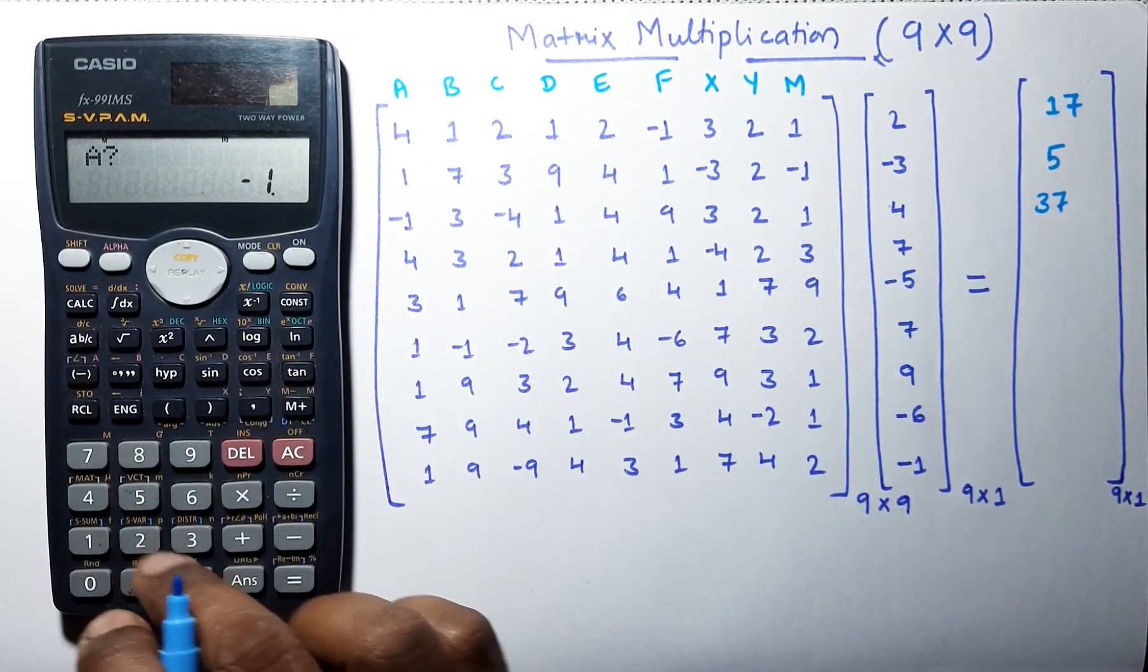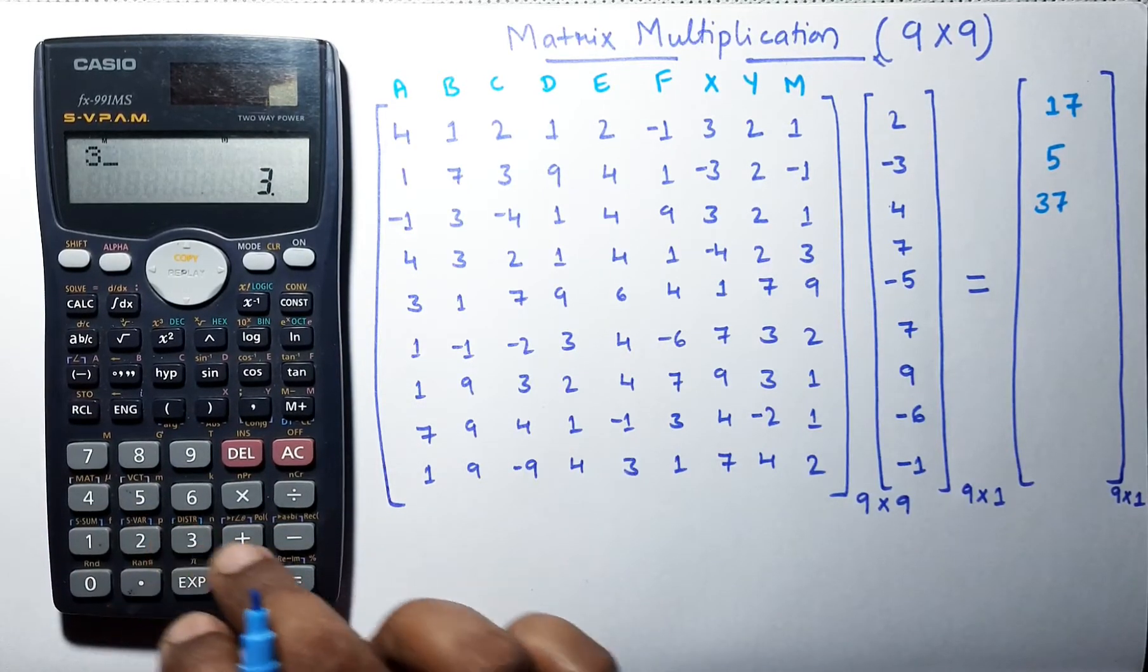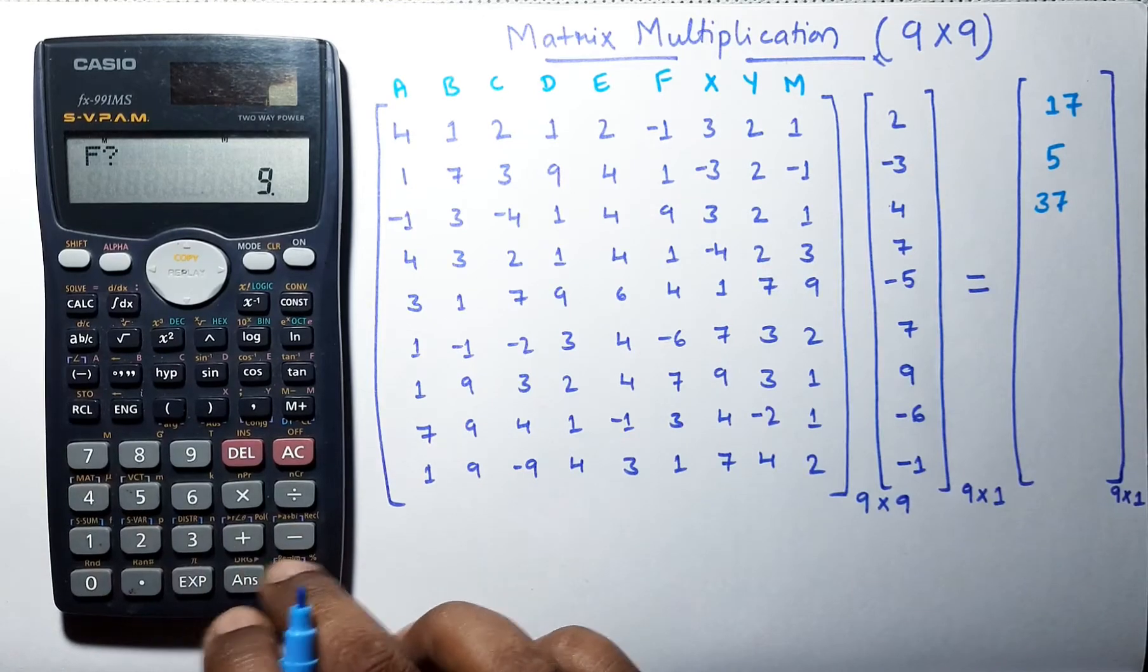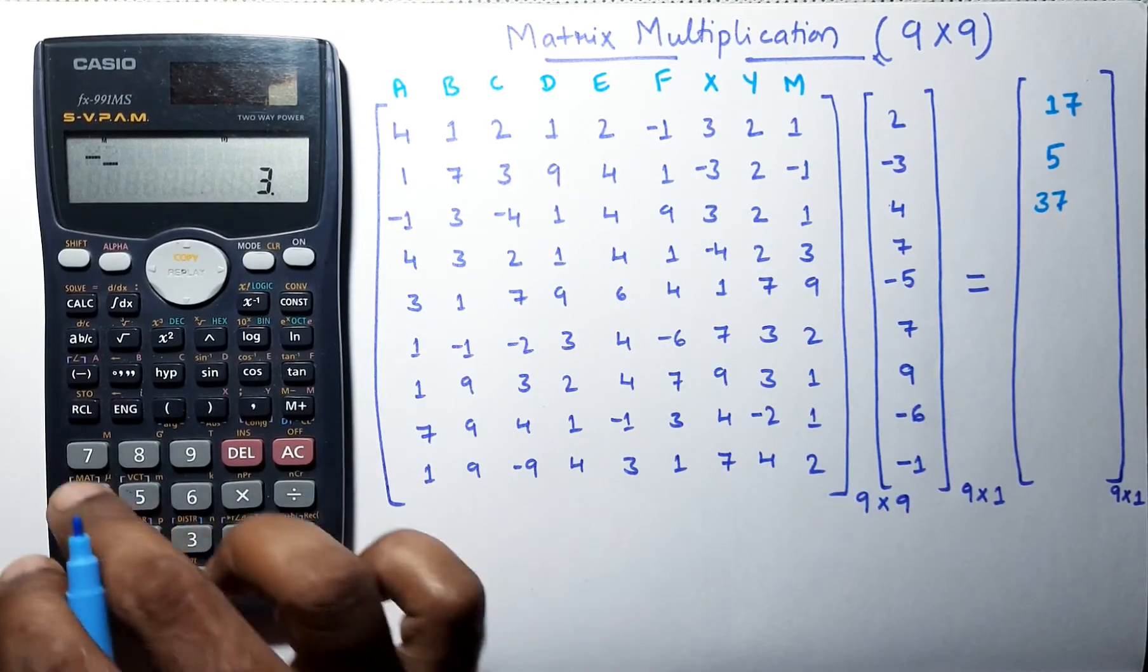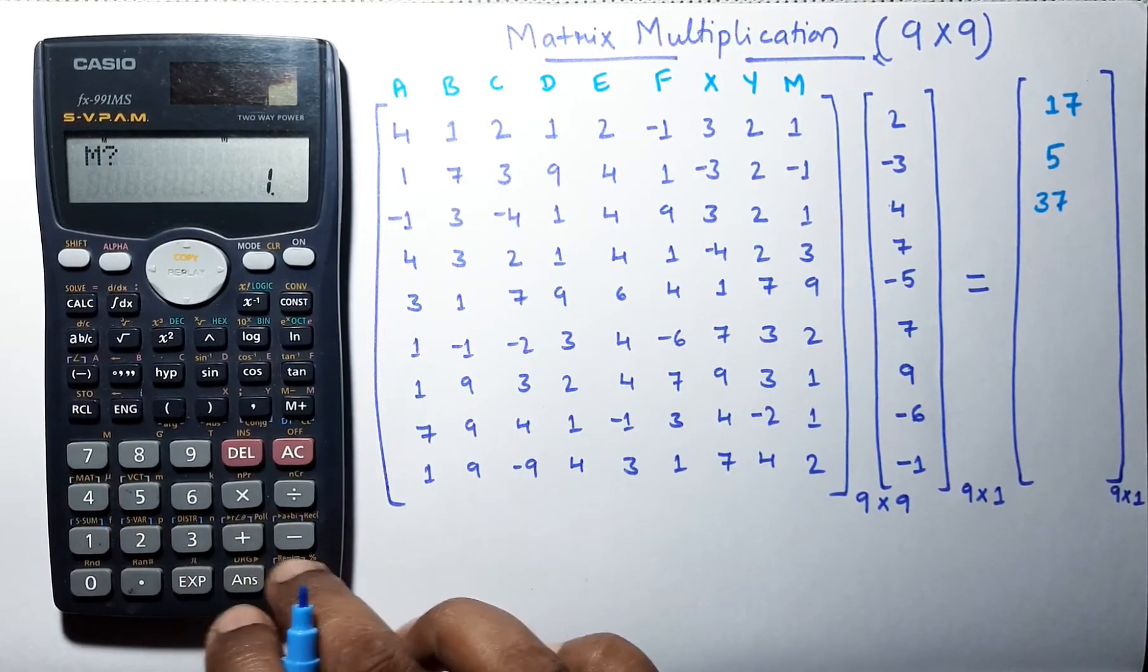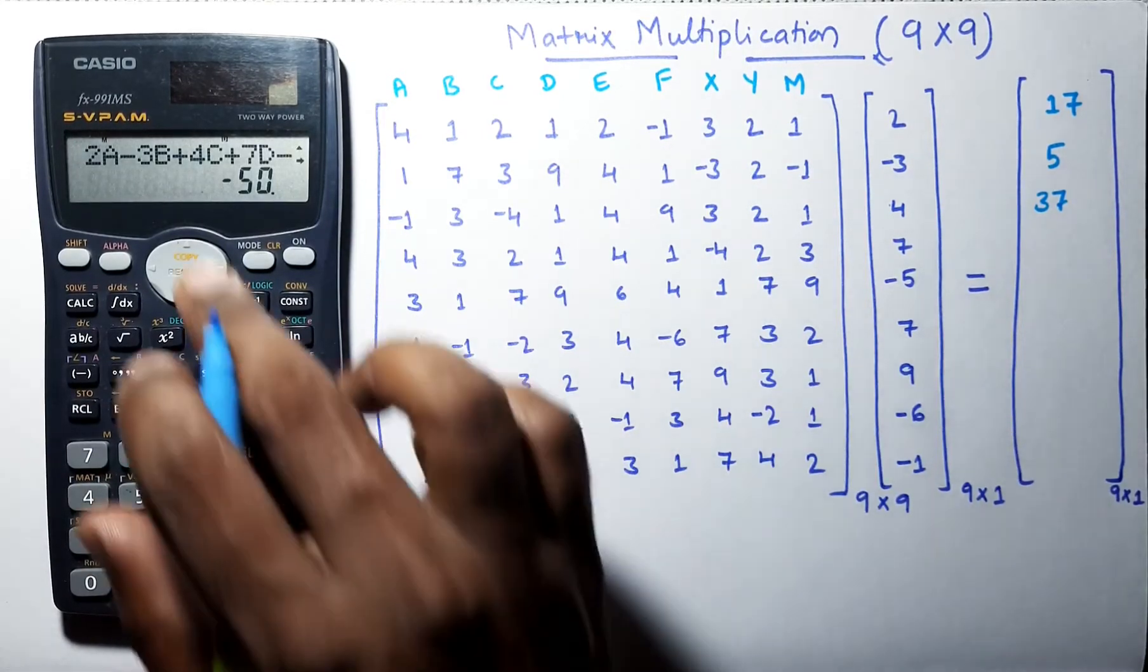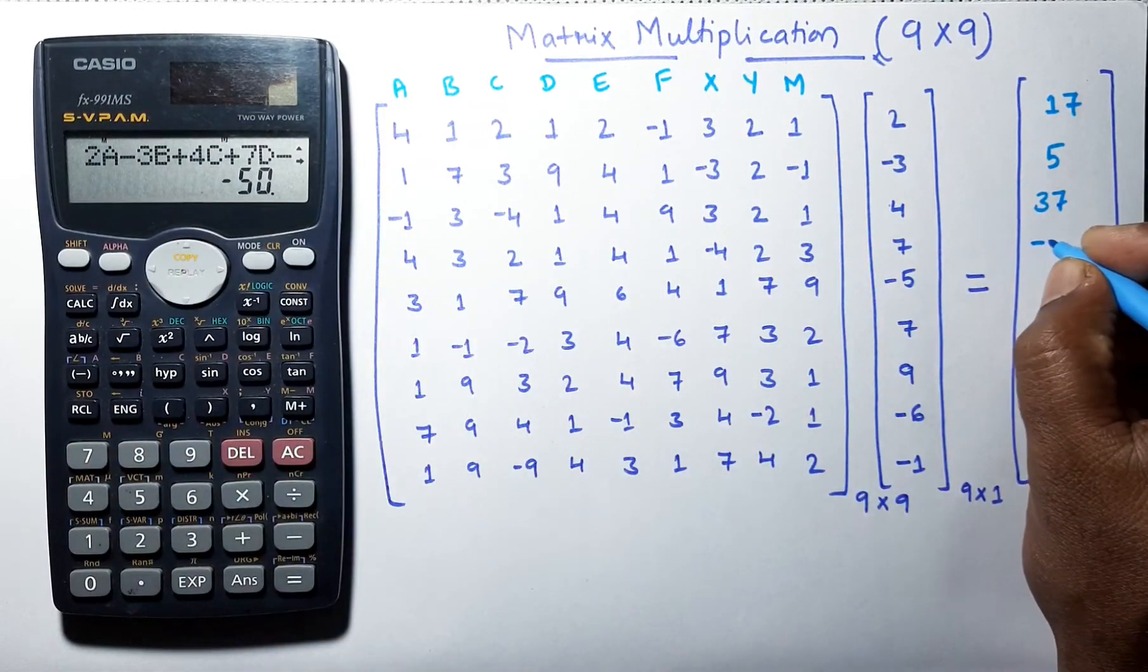Let us enter the next row, which is 4, 3, 2, 1, 4, 1, minus 4, 2, 3, and 3. And the answer is minus 50.